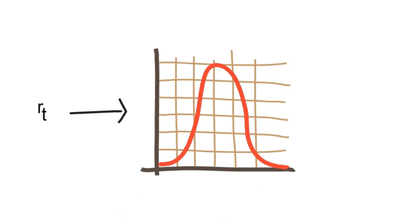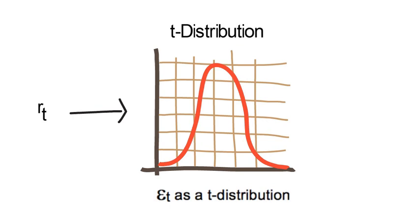But if you want RT to follow a t-distribution or any other type of fat tail distribution, you need to model epsilon t as a t-distribution or with your particular choice of fat tailed distribution.